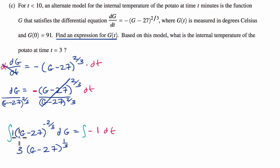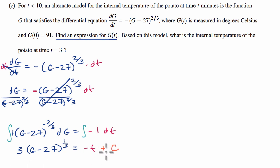So the left-hand side gives us 3 times g minus 27 to the 1/3rd power, equal to negative t plus a constant c. Now to solve for c, they give us the initial condition: g of 0 equals 91. So when t is 0, g is 91.